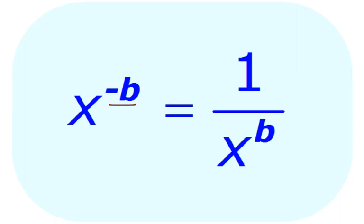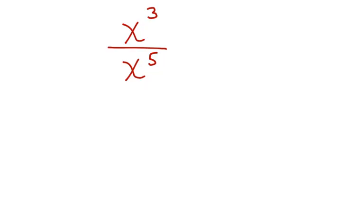Let's take a look at when you can have a situation like this with a negative exponent. Here we have x to the 3rd divided by x to the 5th. Now you know, based on rules already, that when you're dividing and the bases are the same, you subtract the exponents.